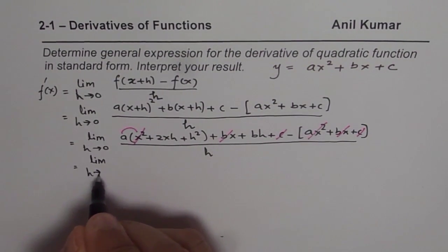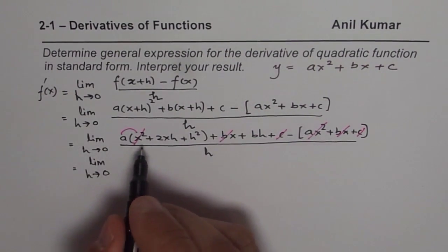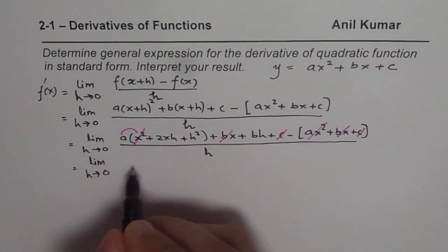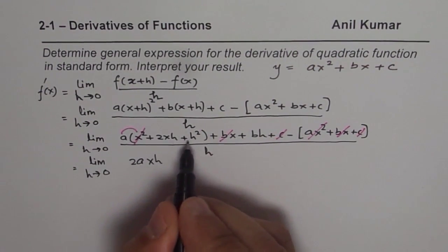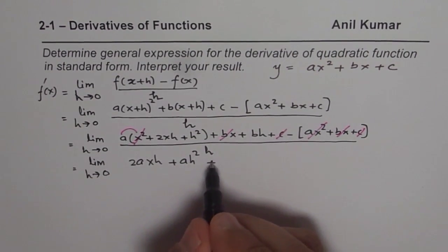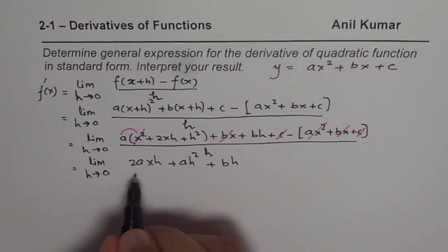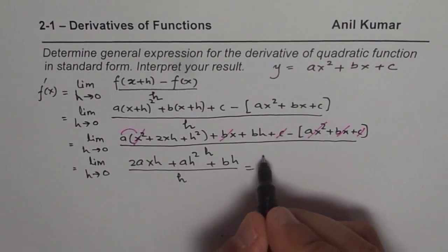Limit h approaches 0. All the terms left will be having h in it. That's important, otherwise you've done a mistake. So 2axh first term, then we have plus ah square, then we have plus bh. So we have these three terms over h.